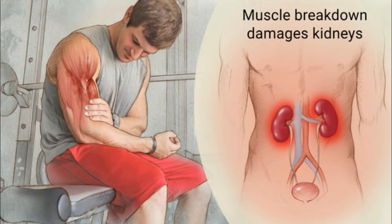However, destruction of skeletal muscle can increase the myoglobin levels in the urine, which can damage the kidneys. The skeletal muscle is a type of muscle in our body and is made up of muscle fibers. It helps to move the skeleton and joints. The muscles of arms and legs contain skeletal muscle cells.